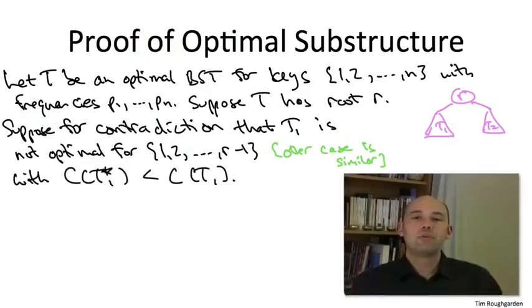Now as usual, the thing which we're going to try to contradict to get the final proof is we're going to exhibit a search tree on all of the keys 1 through n which is even better than T. But T was supposed to be optimal, so that would be a contradiction.